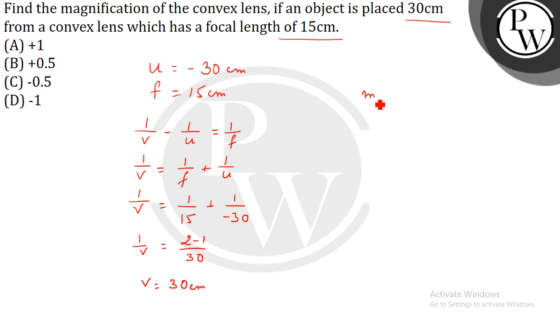Now, to find out the magnification, magnification equals V by U is equal to 30 by minus 30, which gives us minus 1. So, the correct answer is M equals minus 1. Option number D is the correct answer.